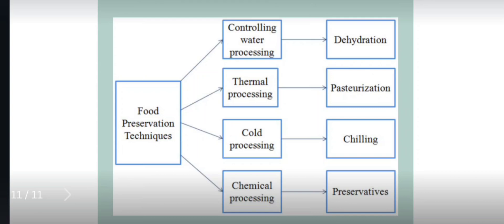Pasteurization is majorly followed in beverage and dairy industries to eliminate pathogenic microorganisms. Cold processing with chilling can suppress or slow down the growth of the majority of pathogenic microorganisms, especially mesophilic microorganisms. Sometimes adding chemical preservatives is also useful in order to increase the shelf life of vegetables and fruits.